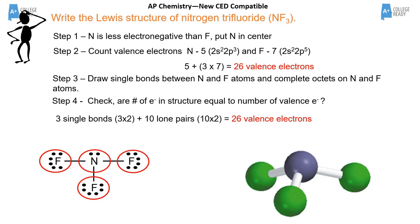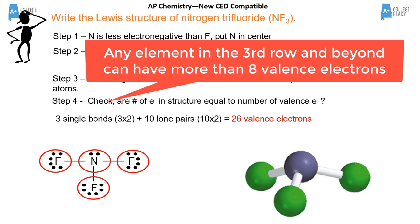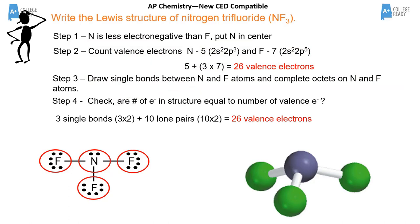When expanding the octet, only elements in the third row of the periodic table and below can exceed eight electrons. Fluorine and nitrogen are in the second row and can never exceed eight. In the third row there's a d sublevel — normally we have 3s and 3p for eight electrons total, but the 3d sublevel provides additional space for extra electrons.